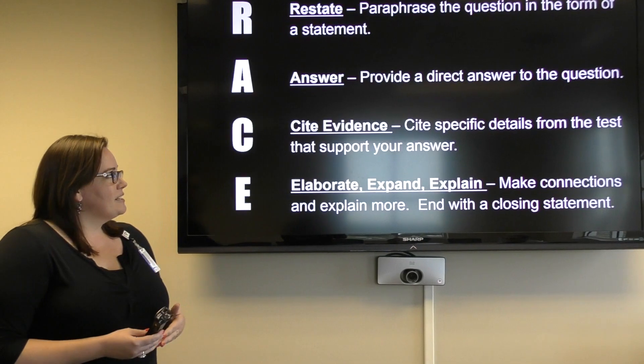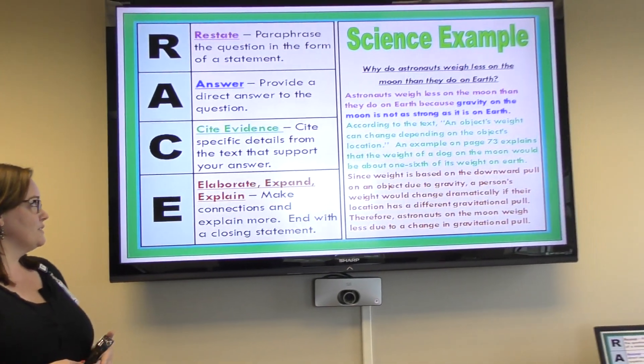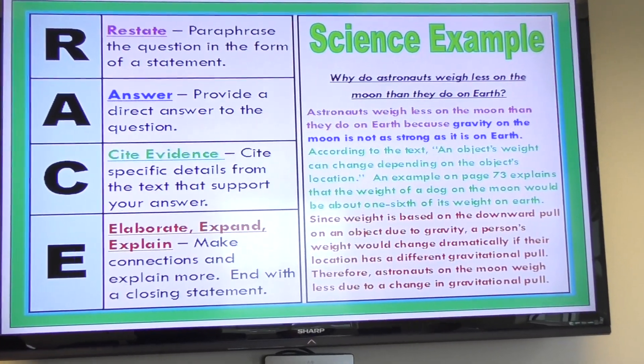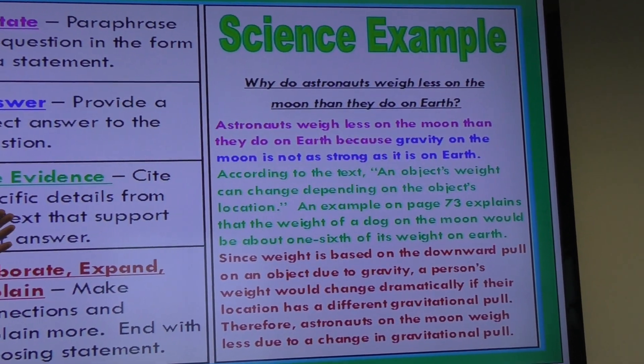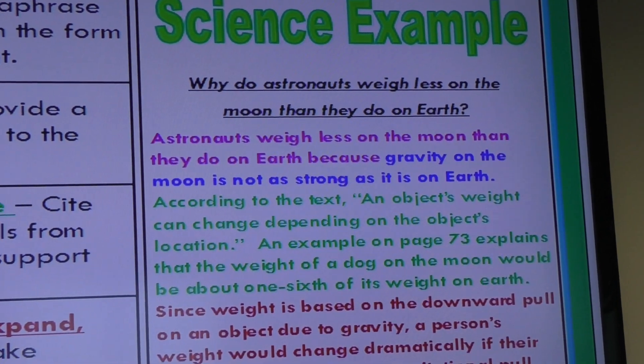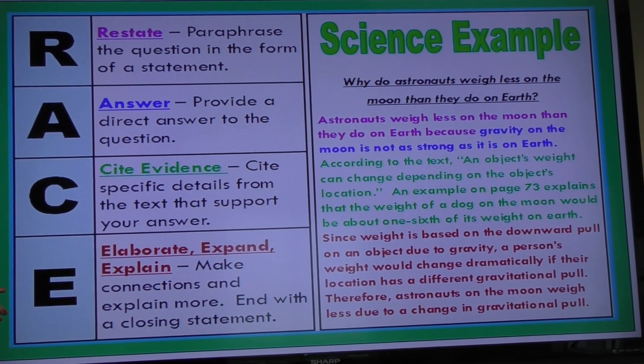So let's take a look at some examples from science first. Here's an example asking students why do astronauts weigh less on the moon than they do on Earth, and you can see based on the colors there the difference between each part of the question.